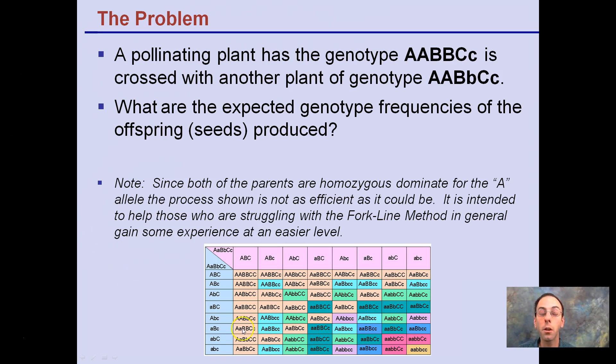If you were to do a Punnett square, it looks something like this, which gets very complex and very hard to keep track of things and increases the odds for an error. We want to try to avoid that. This fork line method is a lot cleaner and a lot easier to understand once you get over the initial hurdle of seeing that it's something different than the Punnett squares you might be used to.